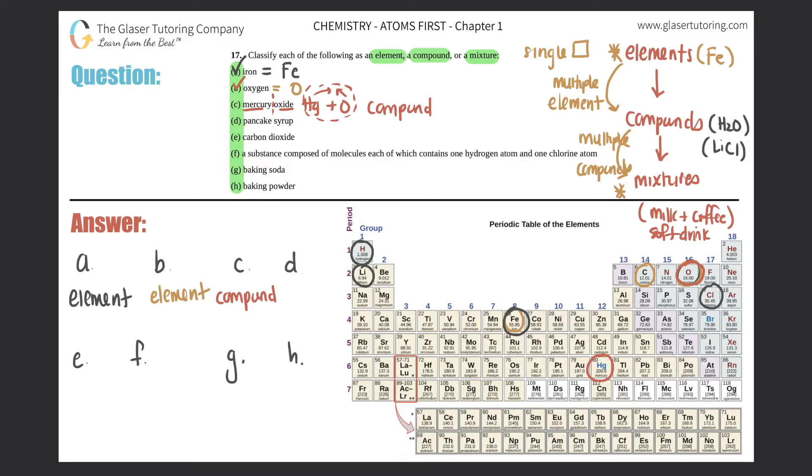Pancake syrup: Is the word pancake syrup on this periodic table? Absolutely not, so it's definitely not an element. Do I know of two or more specific elements that came together to form pancake syrup? Seems even more complicated. What comes together to make pancake syrup? Probably water because it's a liquid, and sugar for sweetness, plus a whole bunch of other stuff. Water is a compound (H2O), and sugar is a compound as well (C6H12O6). A combination of at least two different compounds coming together - this has to be a mixture.